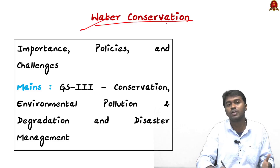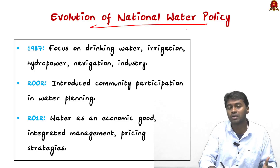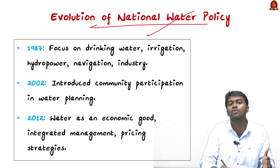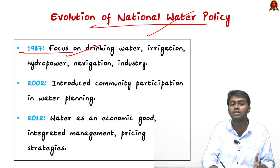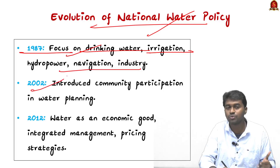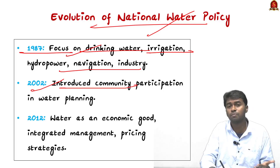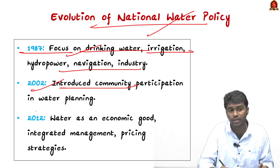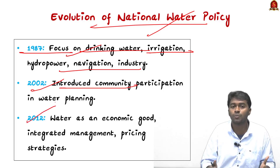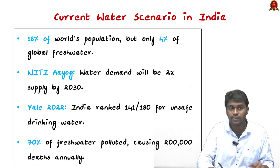This topic — water conservation — can be expected in Mains GS Paper 3. To understand water conservation in India, we need to trace the National Water Policy since 1987. The 1987 policy focused on drinking water, irrigation, hydropower, navigation, and industry. The 2002 amendment introduced community participation in water planning and conservation. The 2012 revision acknowledged water as an economic good and provided for integrated management and pricing strategies.